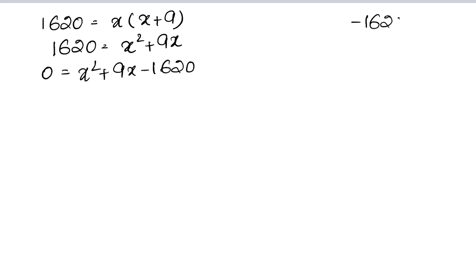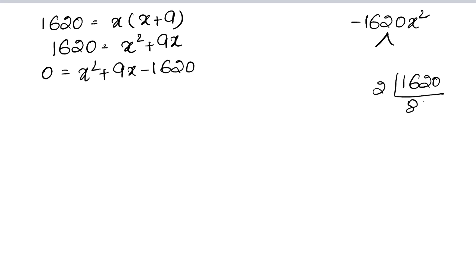Now we need to find two factors of 1620 whose product is minus 1620 and sum is 9. Let's find the factors of 1620.